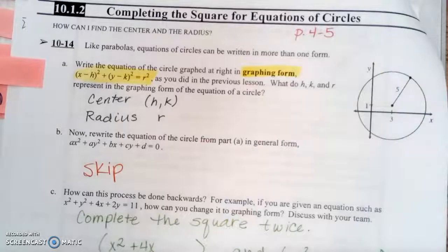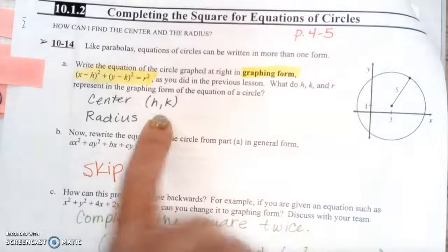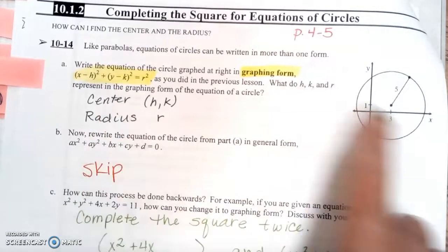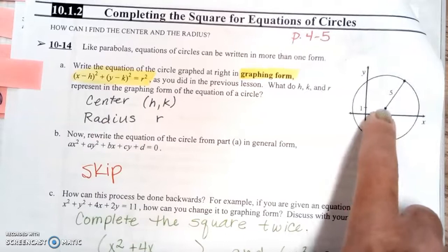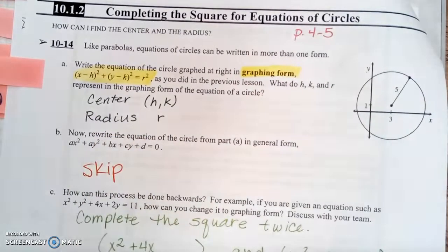What do h, k, and r represent in the graphing form of the equation of a circle? So the h, k is going to be our center. So right there would be the center of the circle, and r is going to be your radius.